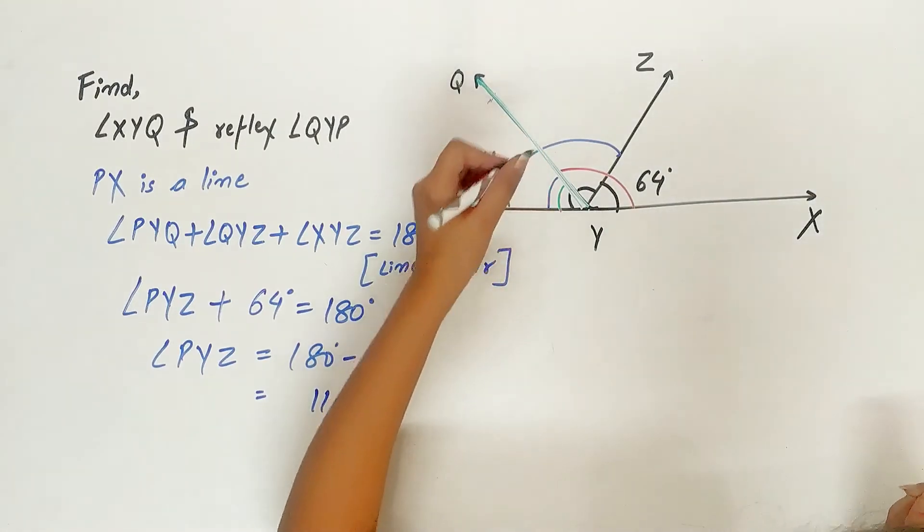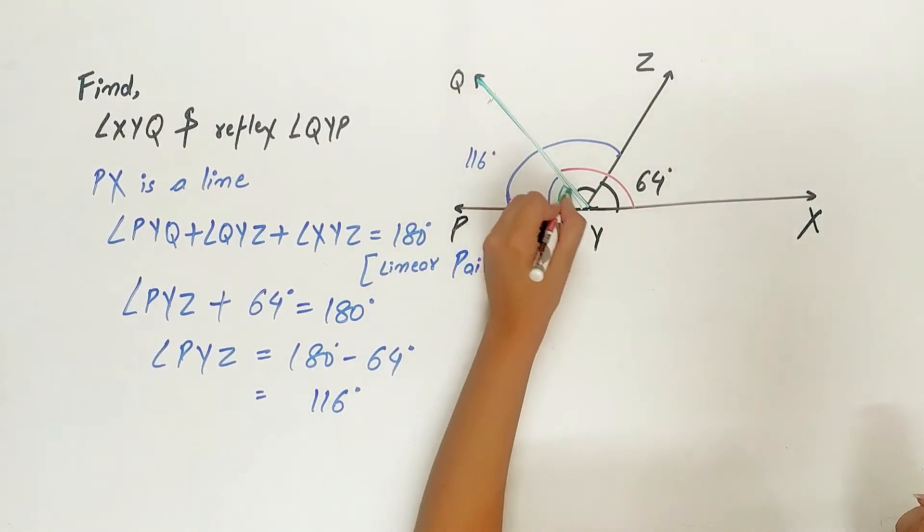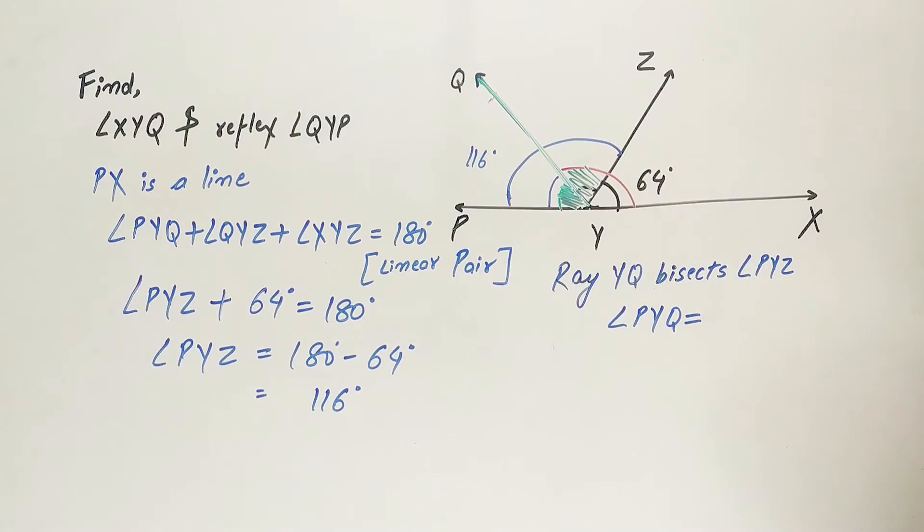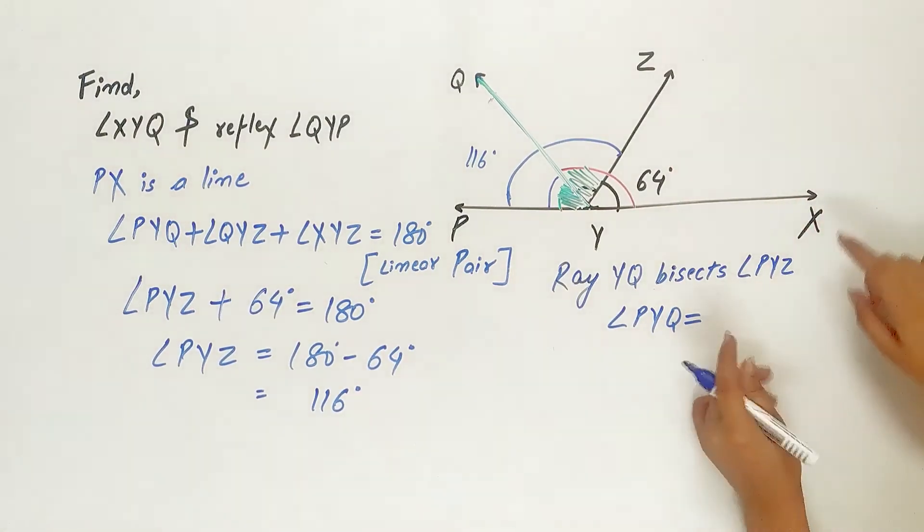That means angle PYQ is equal to angle ZYQ. Bisect means to divide anything into two equal parts.